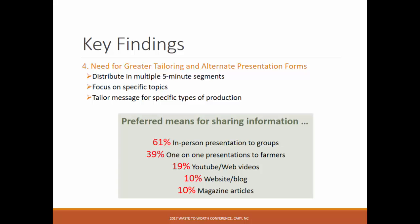Finding four: need for greater tailoring and alternate presentation forms. Participants said to distribute content in multiple five-minute segments, and focus on specific topics — rather than being comprehensive, make it very specific to the type of animal and production practice. As for preferred means of sharing information: 61% felt in-person group presentations were most effective, 39% said one-on-one presentations to producers, and social media and websites were their least preferred method.